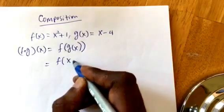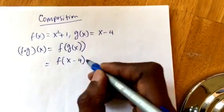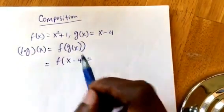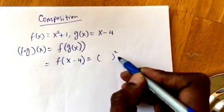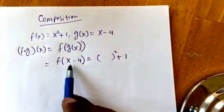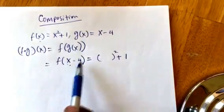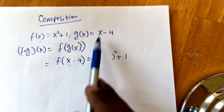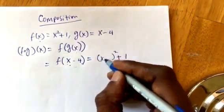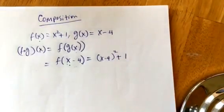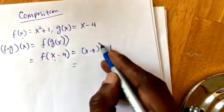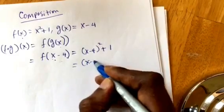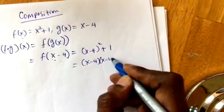g is x minus 4, equals what was the function f. f was something squared plus 1, that something which was x originally we are replacing it with g. So what's g? g is x minus 4. So what that means here is this squared, you have two of them, so it would be x minus 4 times x minus 4.